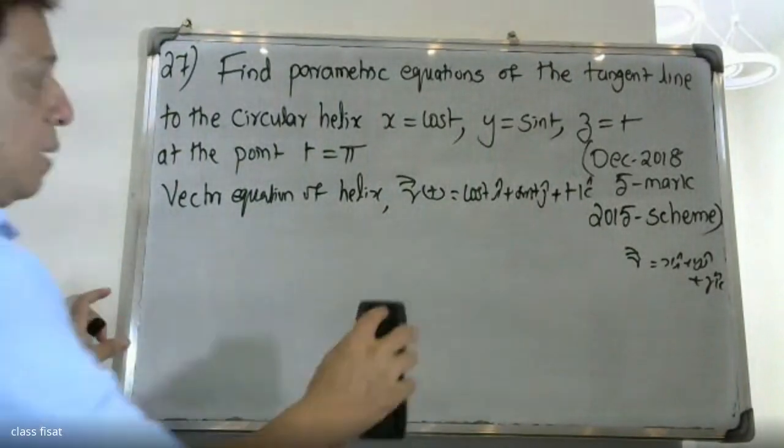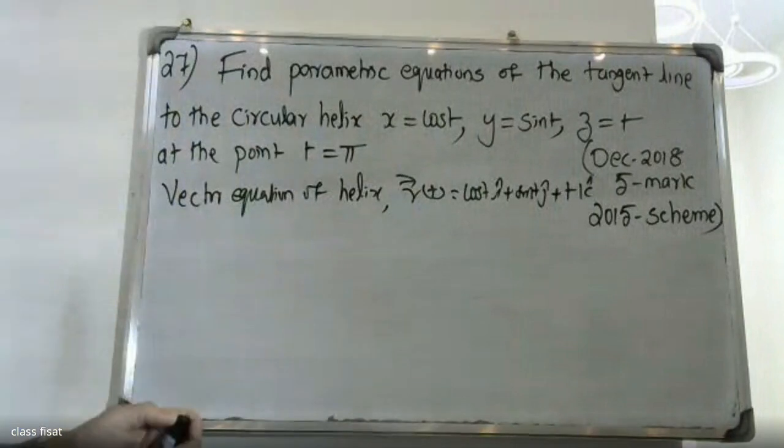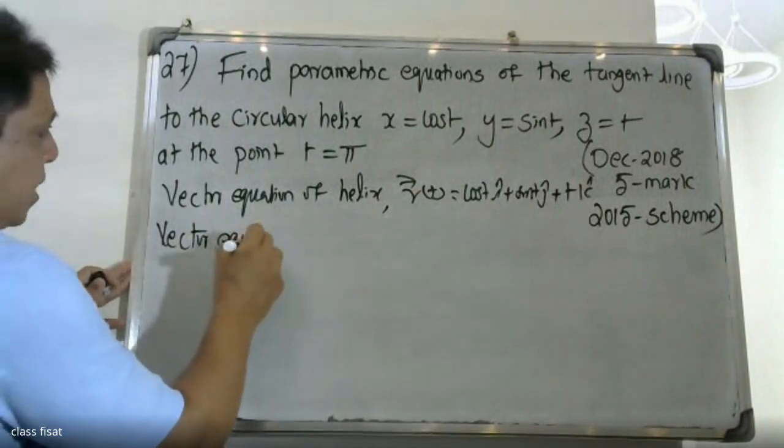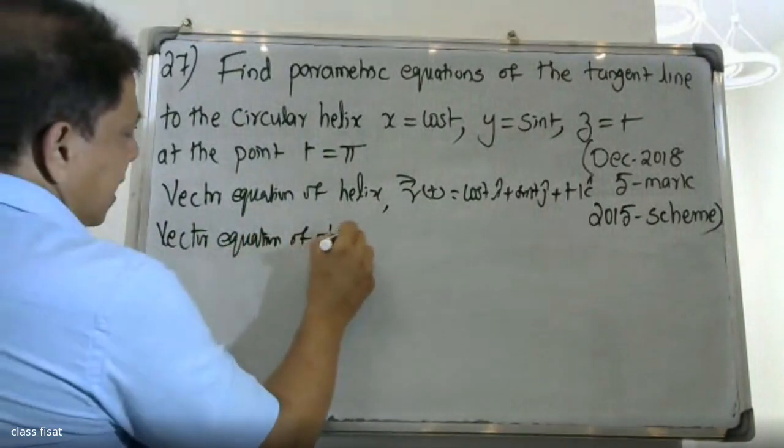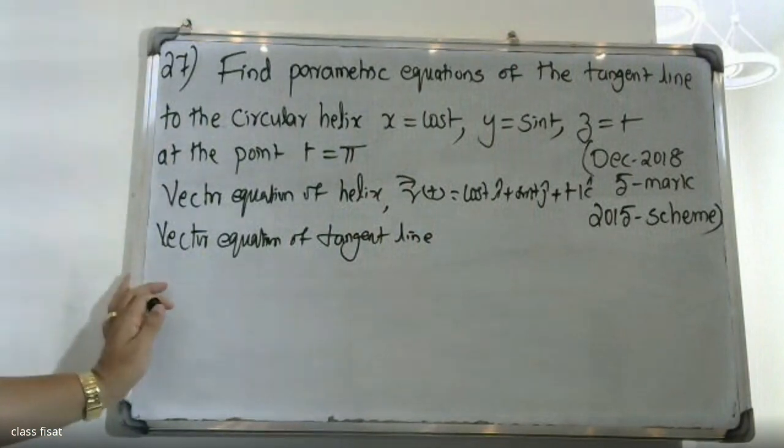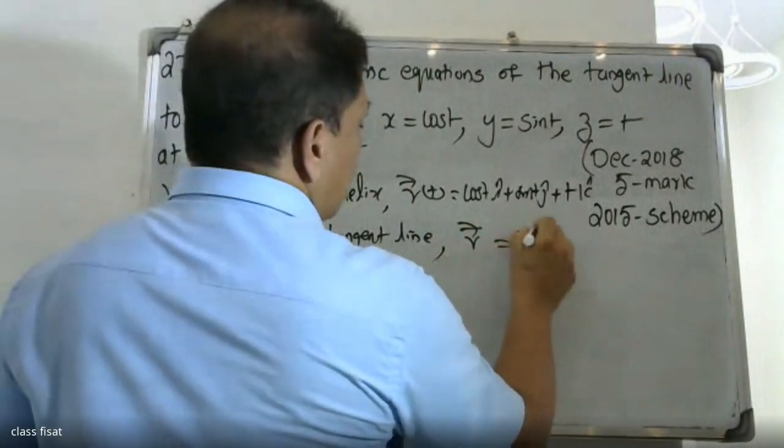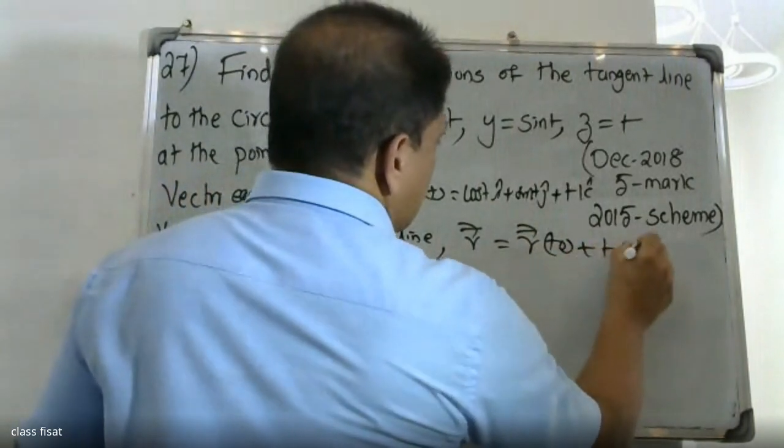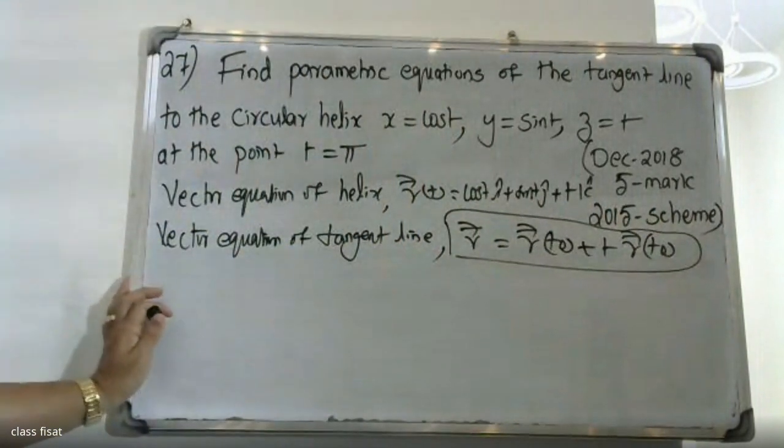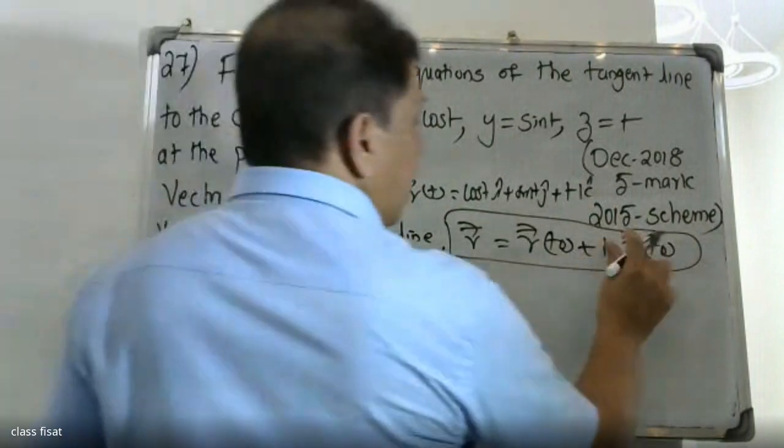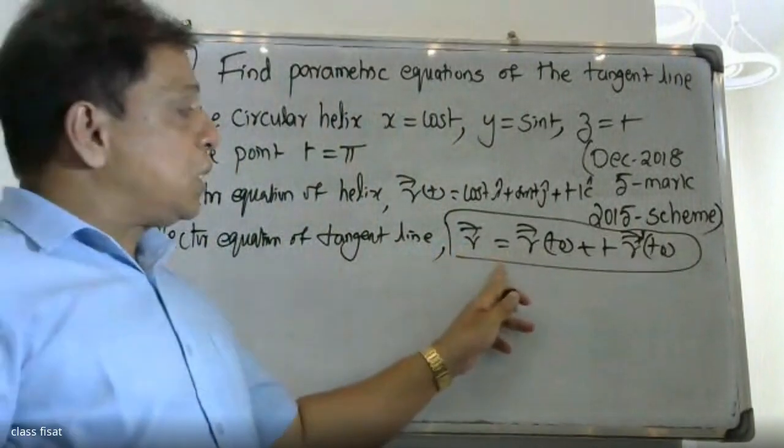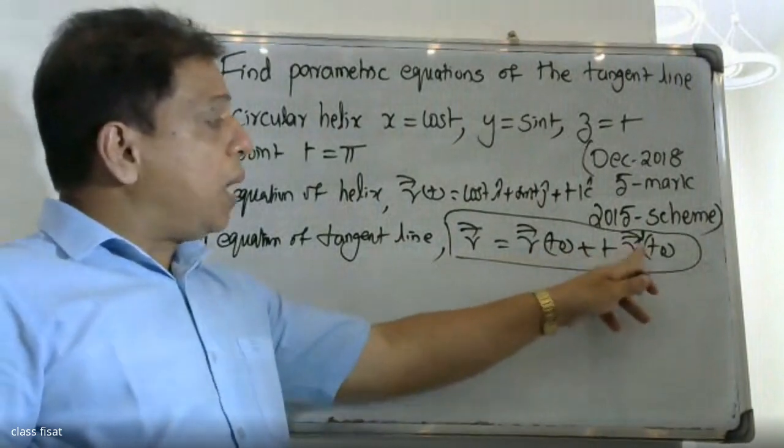Vector equation of tangent line. The formula is: Vector R equals R of T0 plus T into R dash T0. This is the vector equation of tangent line.